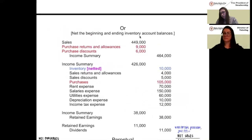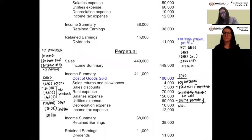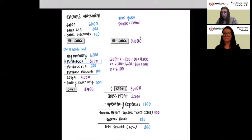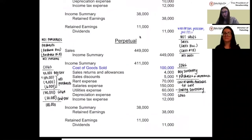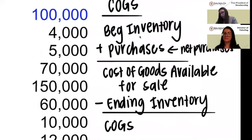Those are the two periodic methods. When we look at the perpetual method, the only difference between perpetual and periodic is that we close certain accounts all into cost of goods sold instead of putting them in other areas. To figure out our cost of goods sold number, there are four things we need using the COGS formula.